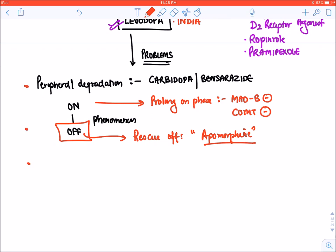The third point with levodopa is levodopa produces dyskinesia. To treat this dyskinesia, the drug of choice is amantadine.